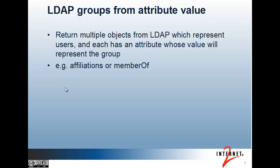Now we're going to do LDAP groups from an attribute value, which also manages multiple groups in Grouper from one LDAP job. But basically the objects that are returned from LDAP represent the users, and each one has an attribute whose value will represent the group. So for example, you might have a filter that returns users and they each have affiliations or a member-of. In my lab, we don't have it set up that way for security reasons, so that we can control which users can read which groups.